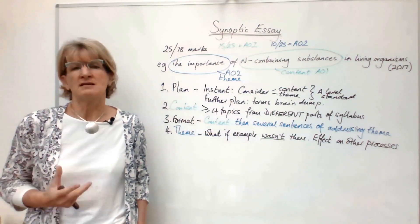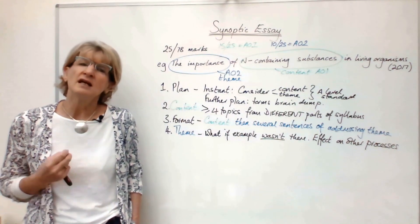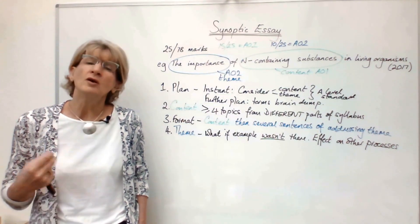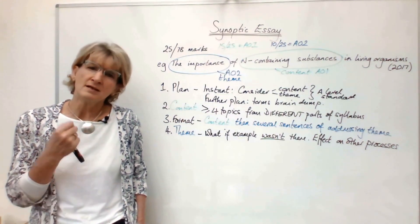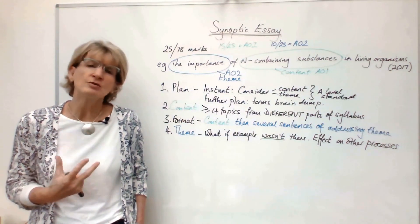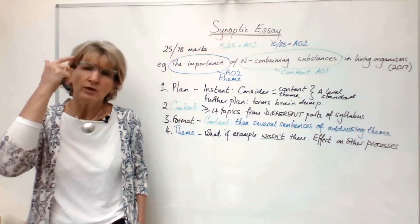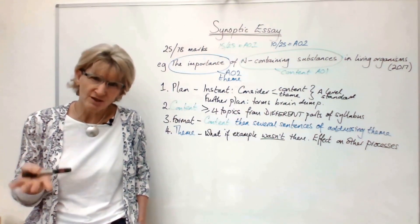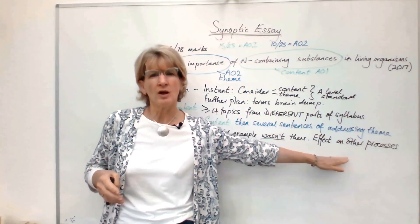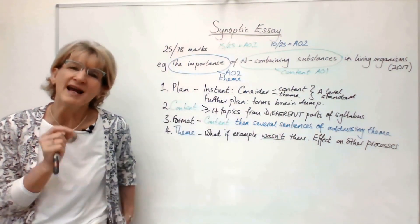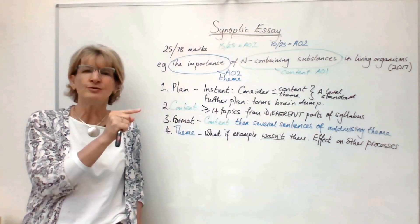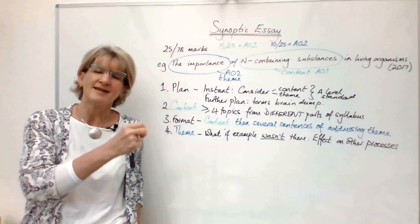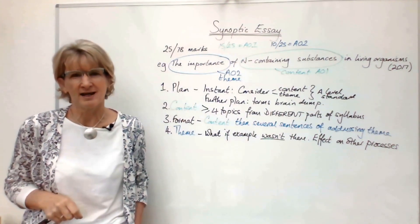The other thing that examiners say is that if you just say, 'if hemoglobin wasn't there, the organism would die,' they simply consider that to be too superficial. What you should be thinking about is rather than just thinking about the organism dying, think about its effect on other processes, because that is going to lead you to be thinking about A-level terminology. And that is key to success in the essay.